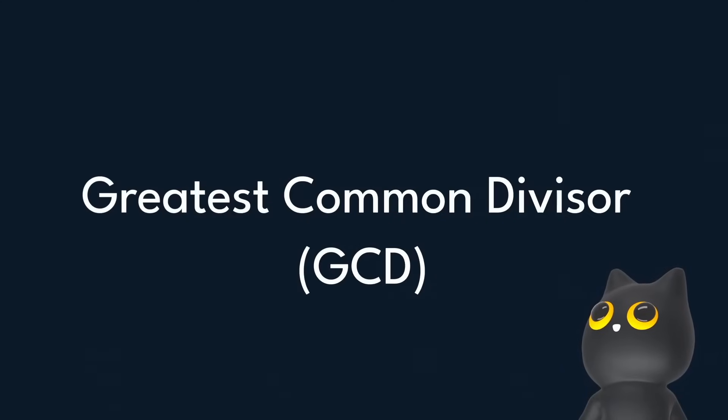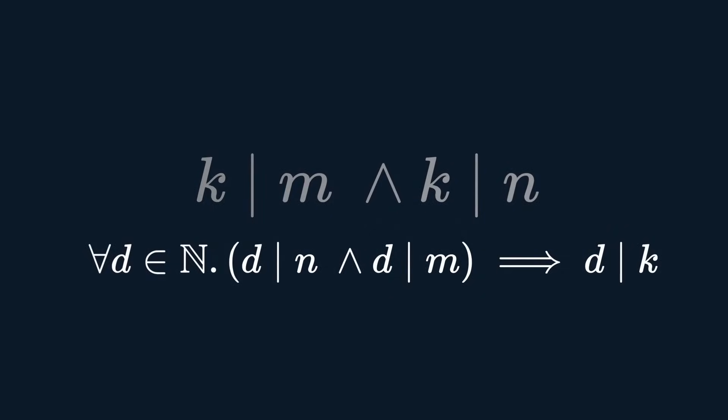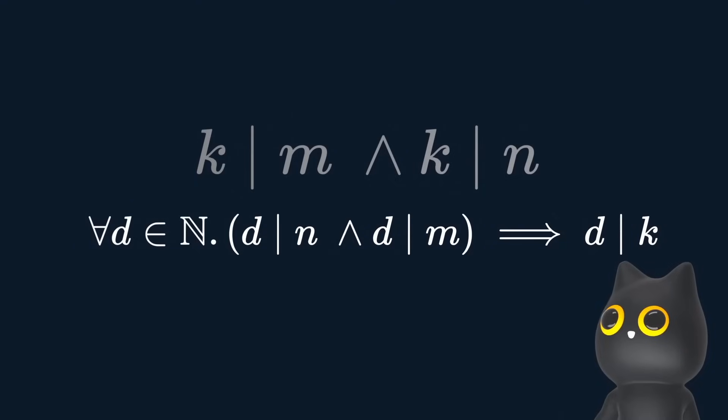Remember divisibility? You could also express the greatest common divisor mathematically using that too. The GCD of two integers, m, n, is the unique natural number k that fulfills these two statements: k divides m and k divides n. And this long statement. Great! Dealing with numbers is fun, but what about sets?